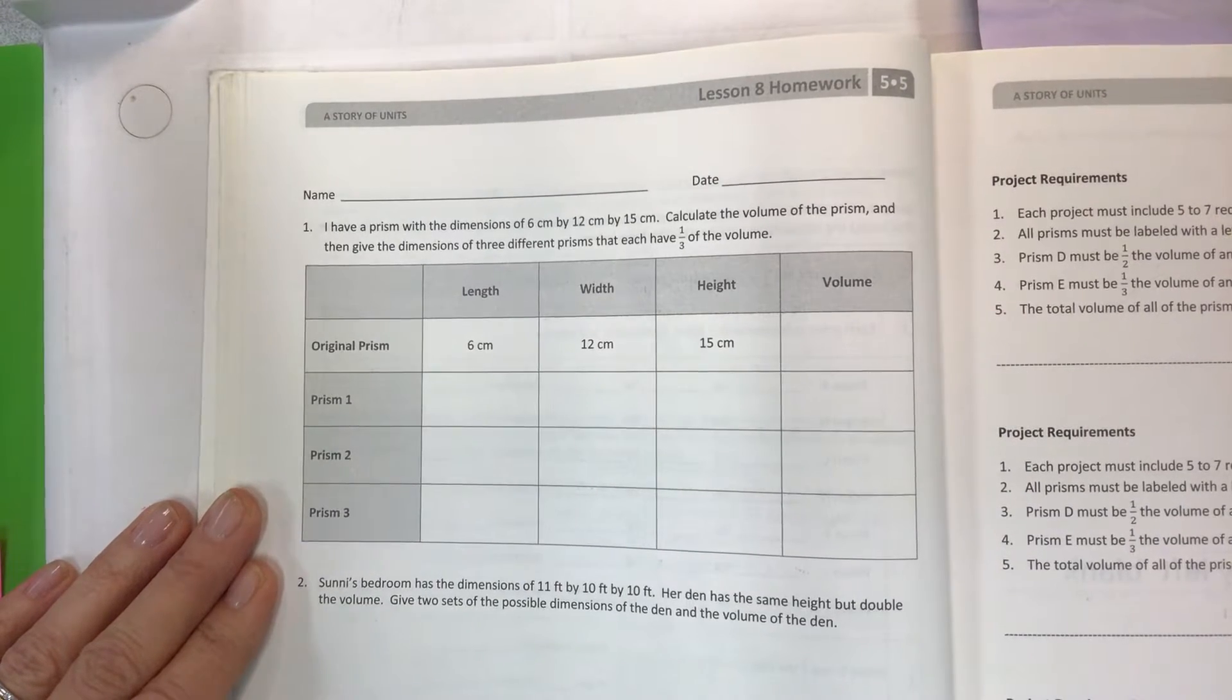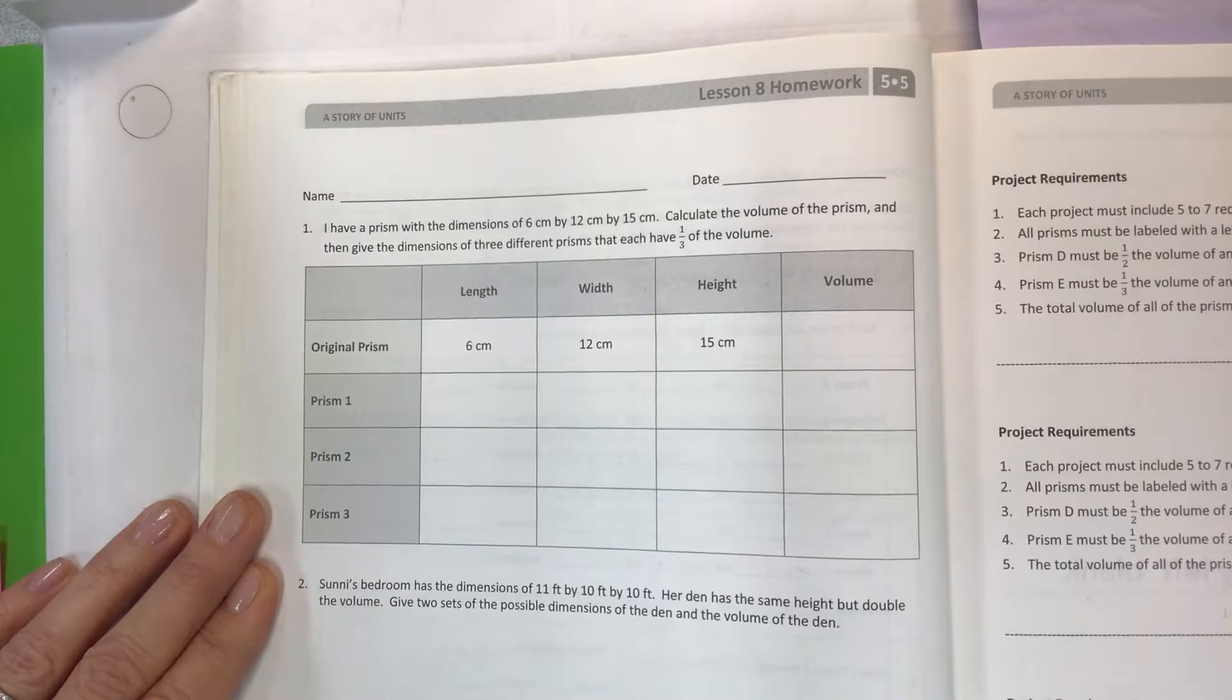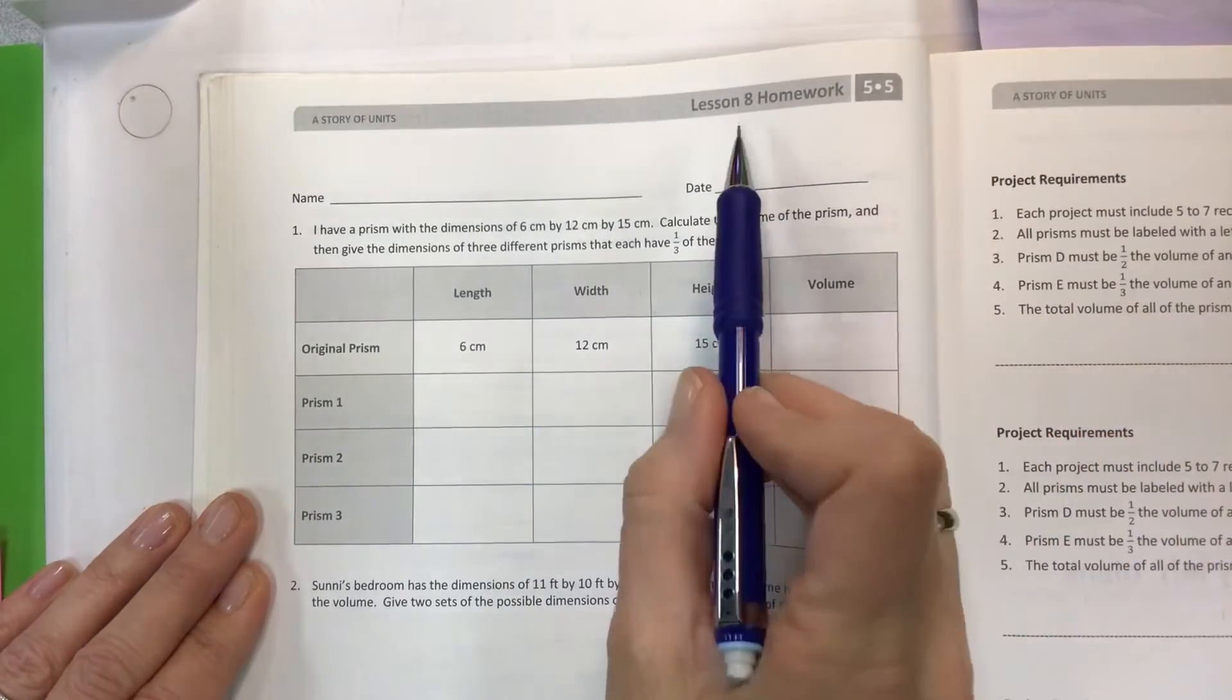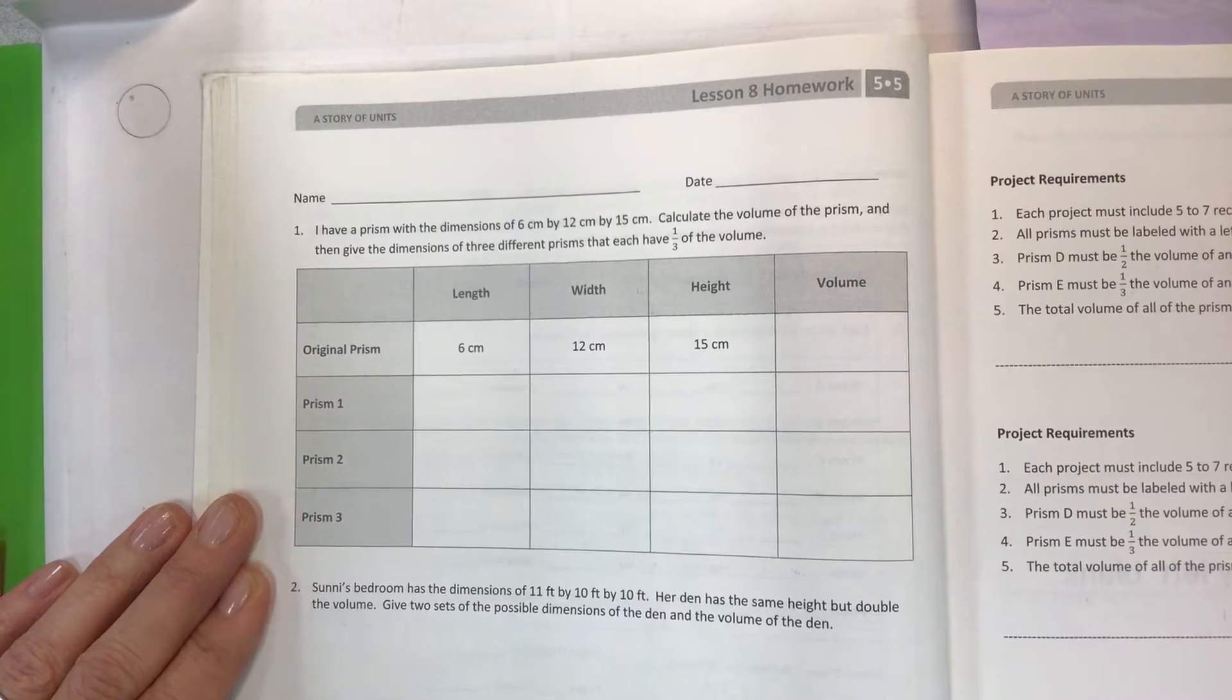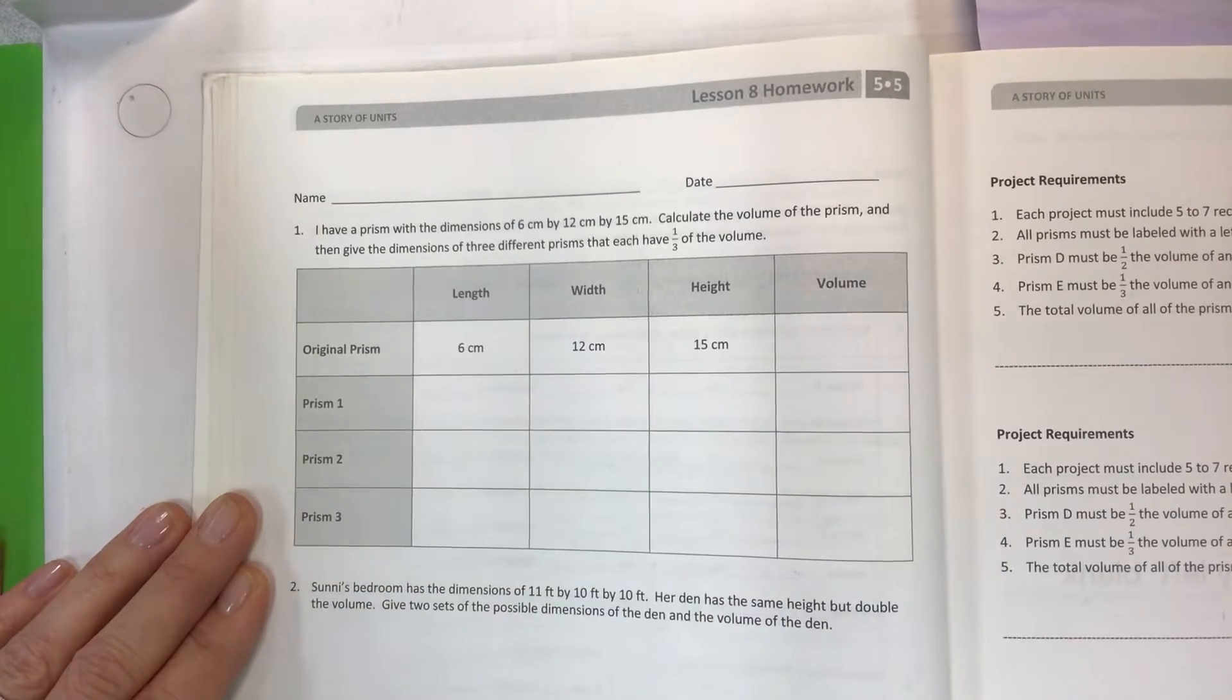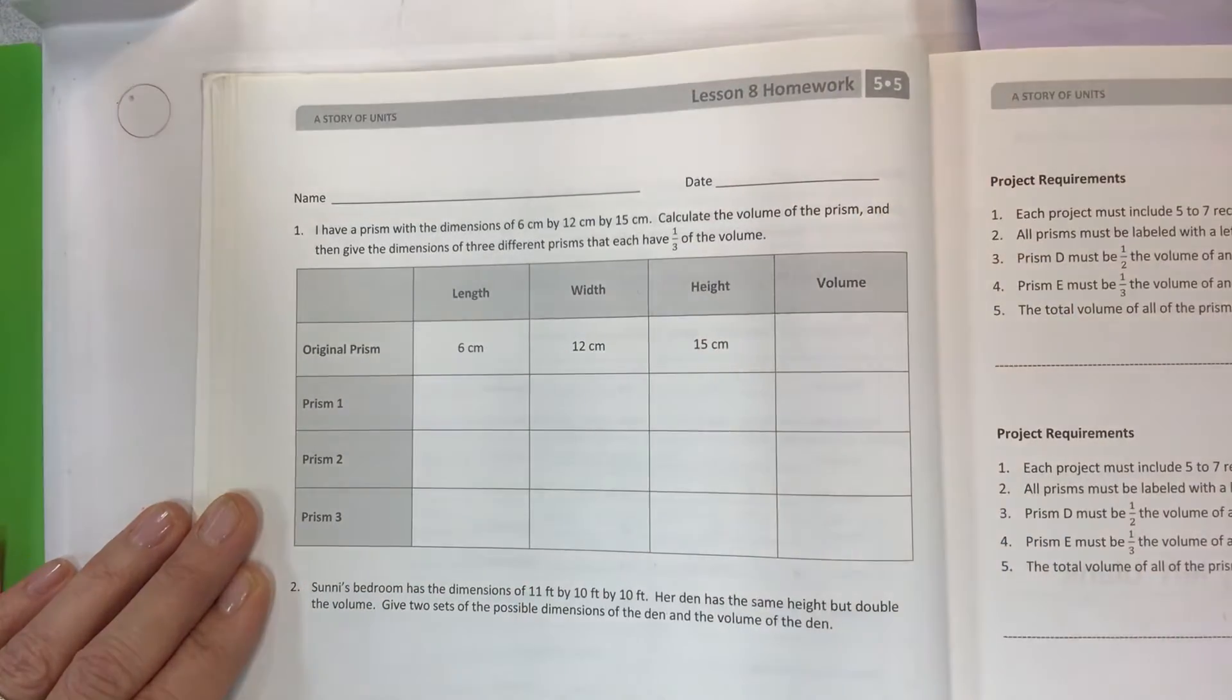Hey there kids, welcome to another math video. This is for Eureka Math Grade 5, Module 5, Lesson 8 homework. This should be a fairly quick video on this short assignment. The objective is at the bottom of the page: apply concepts and formulas of volume to design a sculpture using rectangular prisms within given parameters.